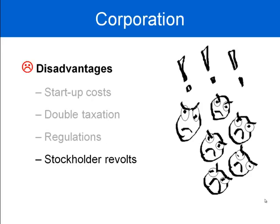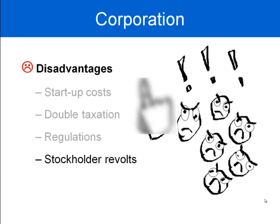Stockholder revolt is another disadvantage. Shareholders you've sold shares to may not be happy and may have different views about where the business should go. In a corporation, shareholders have a right to learn about what management is doing and to vote on critical issues. The addition of hundreds or thousands of additional owners adds to the complexity of decision making.